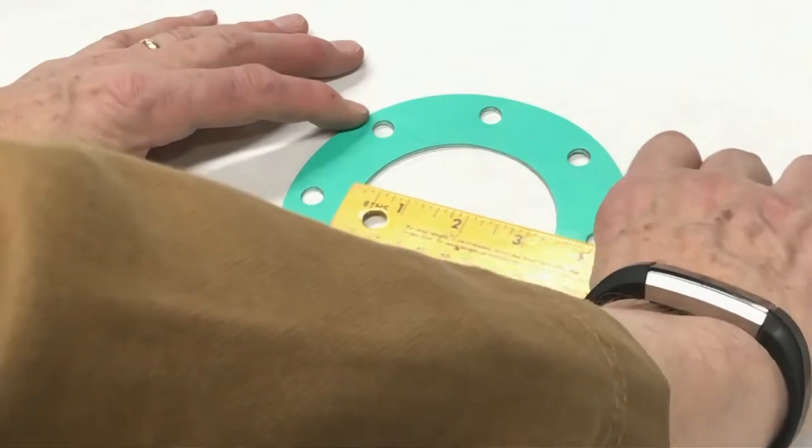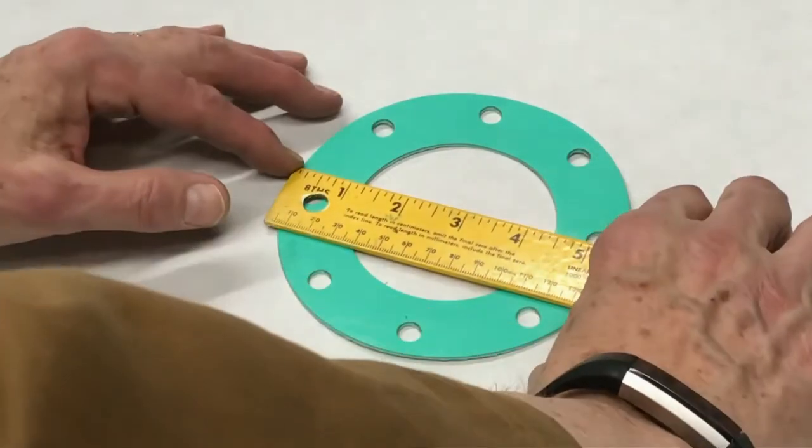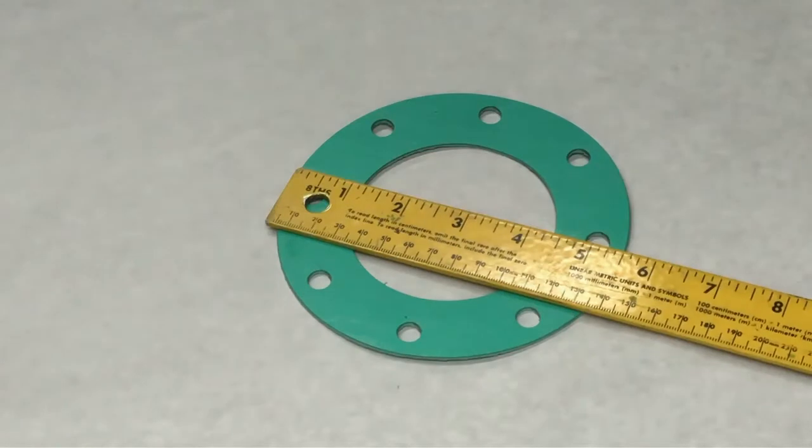Now, cross the diameter, we get the outside diameter. This would be five and a half inches OD.